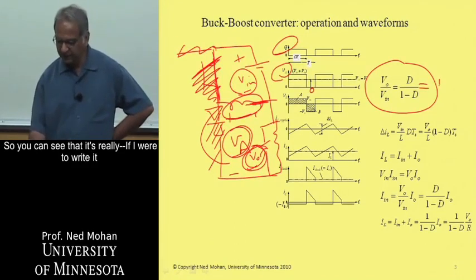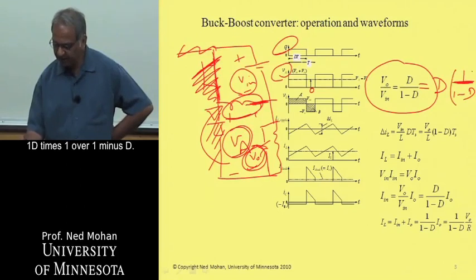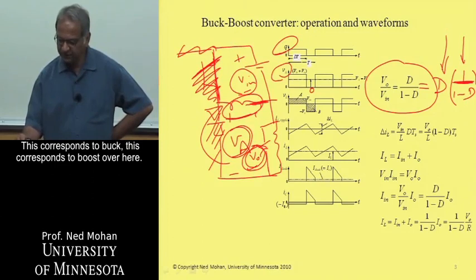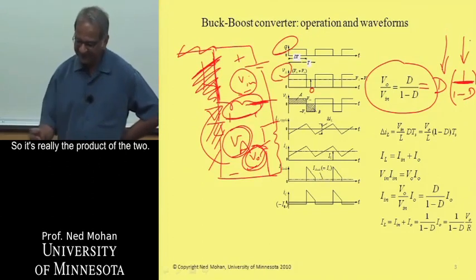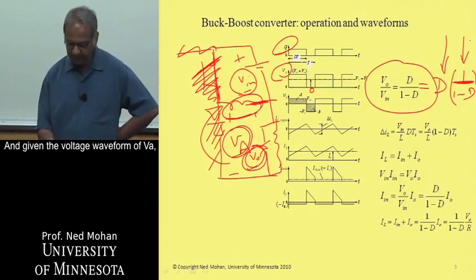So you can see that it's really, if I were to write it like this, D times 1 over 1 minus D. This corresponds to buck. This corresponds to boost over here. So it's really the product of the two. And given the voltage waveform of VA, we can plot the inductor voltage.